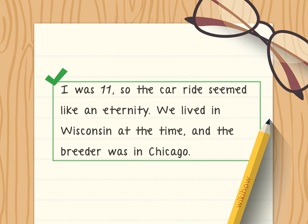Set the scene of the story. Provide a setting for your story and orient your reader to the time your story happens. This helps them place themselves in the narrator's shoes and understand their state of mind for the events. You might say, 'I was 11, so the car ride seemed like an eternity. We lived in Wisconsin at the time, and the breeder was in Chicago.' All background information after the topic sentence, such as other characters and where the story takes place, should be approximately one to four sentences long.